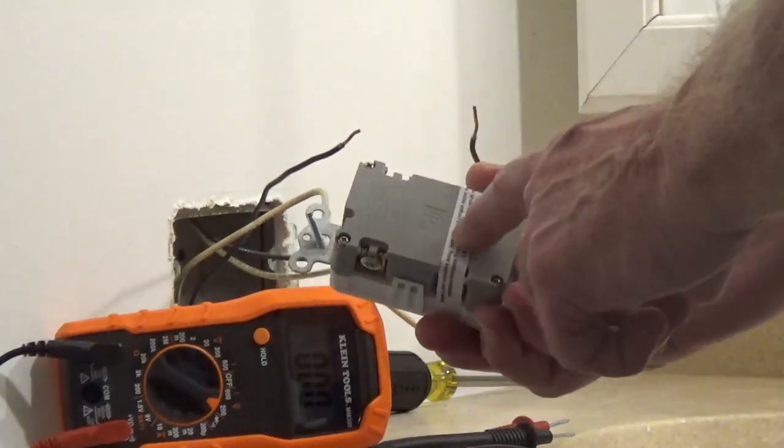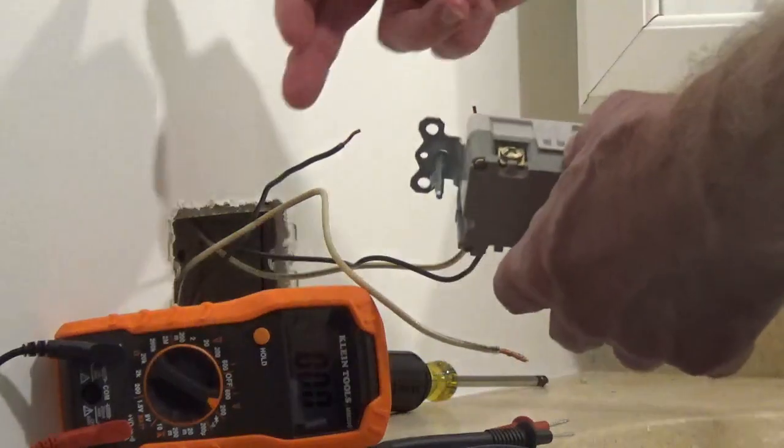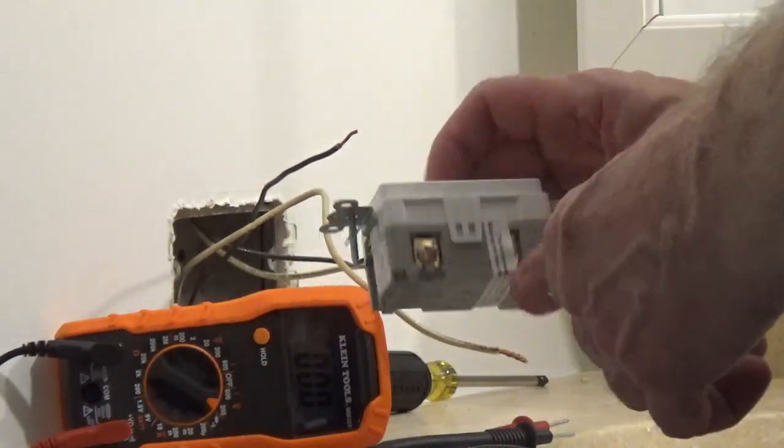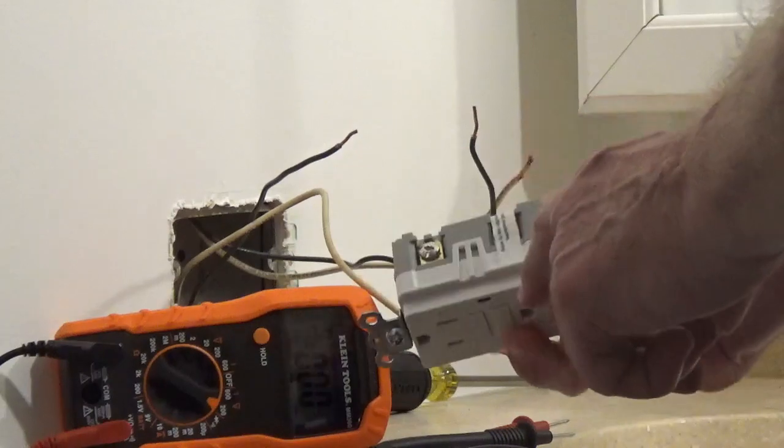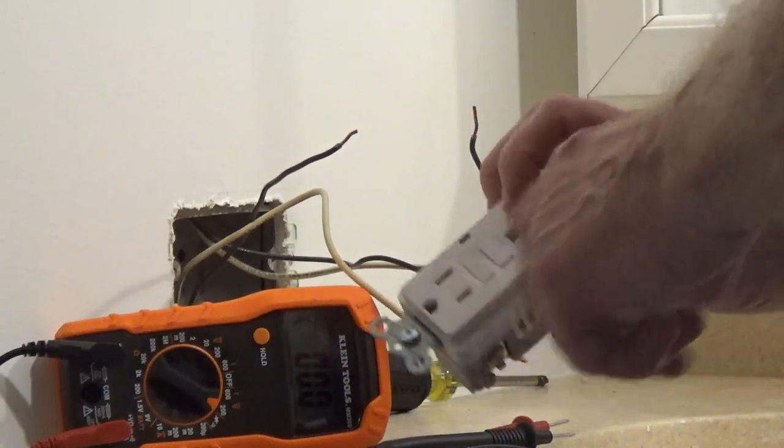And that's the side without the tape generally, and you'll be using the hot wire, in this case, the black wire to the brass side or the narrow slot, and your white neutral wire to the silver screw or the wide slot.